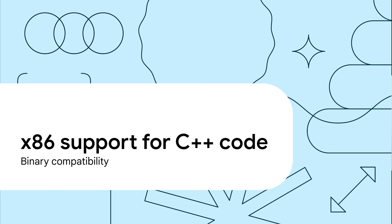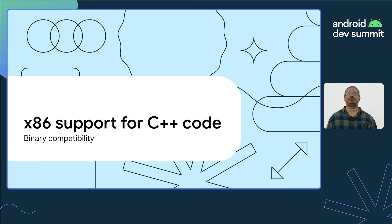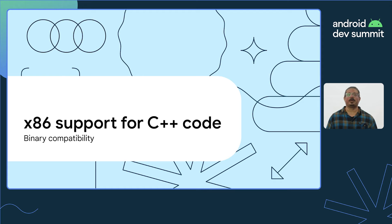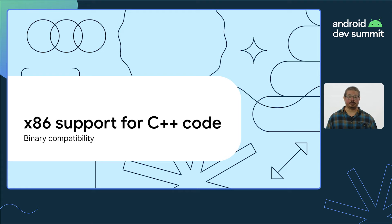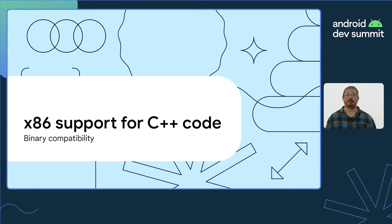Another common issue we find with device support for Chrome OS is binary compatibility for games or apps with C++ code. Different devices have different CPUs and instruction sets. Because of this, we need to make sure that our app supports all of the relevant application binary interfaces, or ABIs. If you've only run your app on Android phones in the past, you may have only focused on ARM devices. However, Chrome OS devices often use chips with x86 architectures. Thankfully, due to binary translation, many Android apps will run on an x86 Chrome OS device even if an x86-compatible version isn't available. However, this binary translation can hinder your app's performance and hurt battery life, so it's better to provide x86 support explicitly.